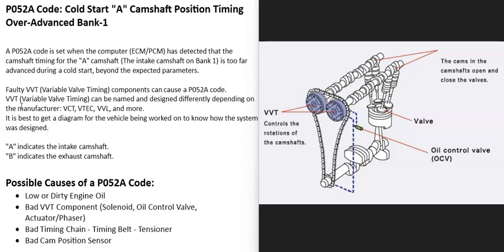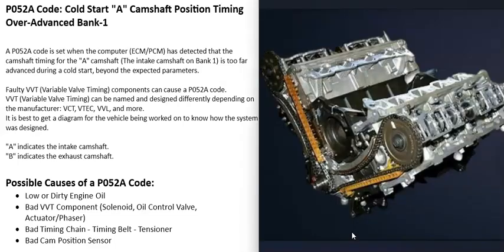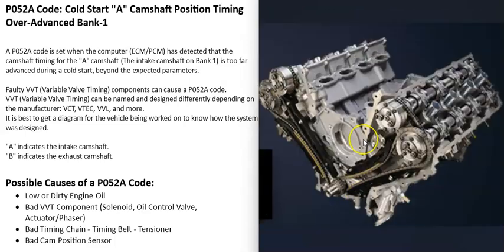For vehicles with variable valve timing, which is very common, a bad VVT component can cause this P052A code. Keep in mind that variable valve timing can be named differently depending on the manufacturer, with different component names and designs. Also, the 'A' in this code points to the intake camshaft. If you have dual overhead cams, there are two cams per bank — 'A' is the intake side and 'B' would be the exhaust side.